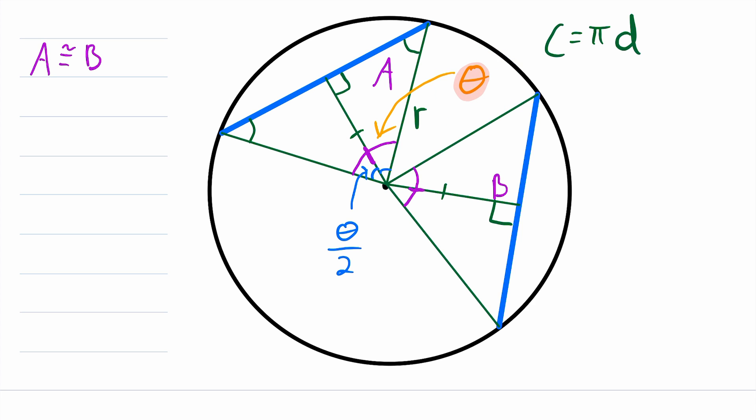So then if you know θ, the measure of this purple angle, and you know the measure of the radius of the circle, then you can use a specific trigonometric ratio to find the length of this segment here. Then, keeping in mind that these right triangles are congruent, if you know the length of this segment, you'll be able to find the length of this whole chord.